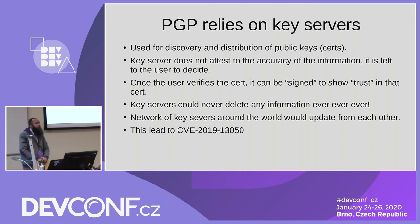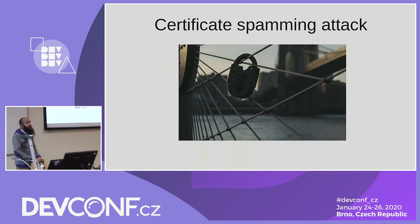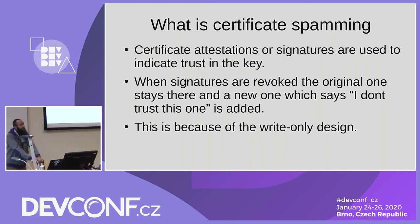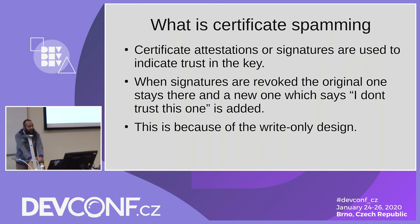This led to a very interesting flaw reported last year, assigned CVE-2019-13050. If you Google it, you can find a lot more information including ways to reproduce this. It is also known as the certificate spamming attack. Certificate attestations or signatures are used to show that you trust a key. When signatures are revoked, the original signature stays and you put a new signature on it saying this signature revokes your trust. This exists because of the write-only design.